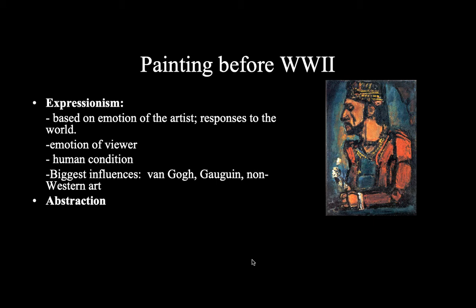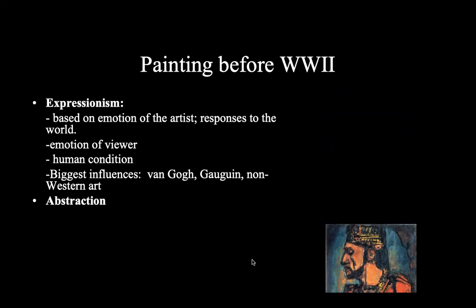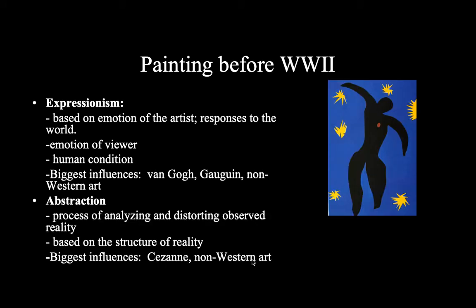Another style that's very common before World War II is Abstraction, which is a distortion of reality. When you look at this paper collage by Matisse, you know it's a person, but it doesn't look like a realistic depiction. It has a head, two arms, two legs, and a torso, but it's not super realistic. Their influences were people like Cézanne, as well as non-Western art coming out of the colonies in Africa.